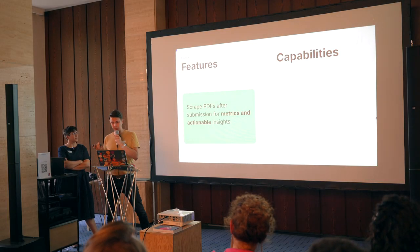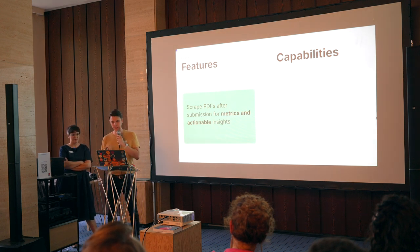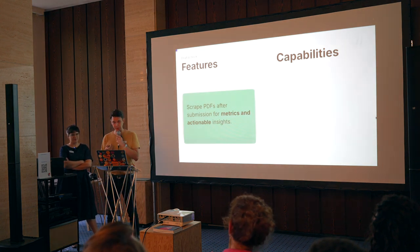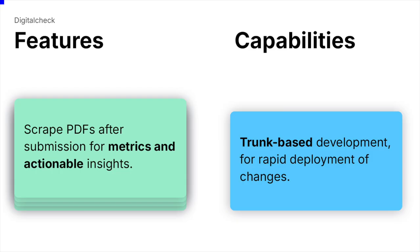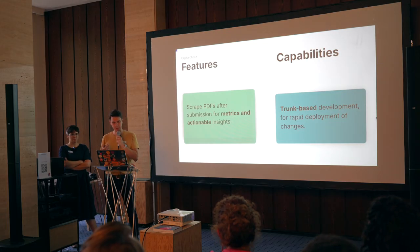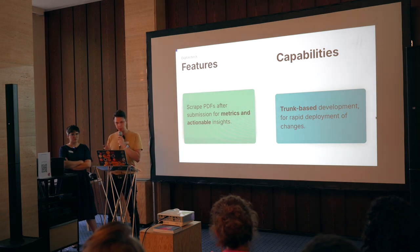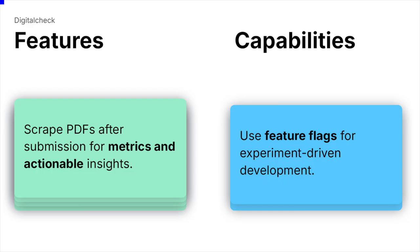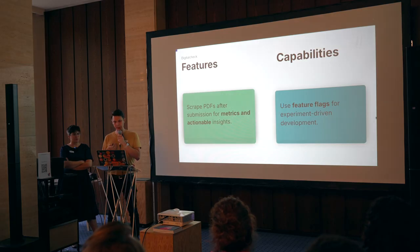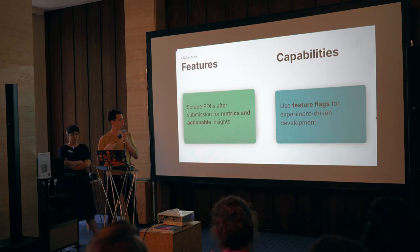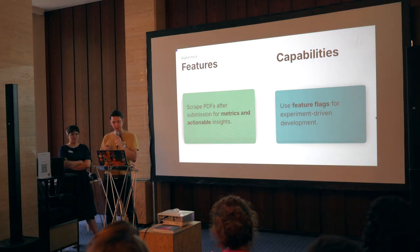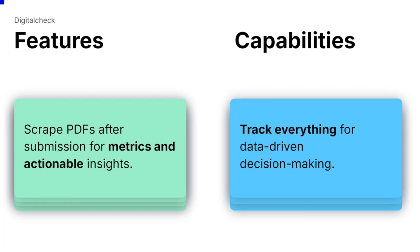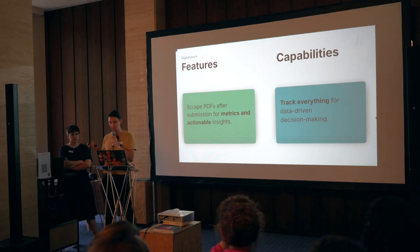We also have some less visible features built into our development process. We're working trunk-based, meaning we can deploy changes really quickly — releasing new versions of the website multiple times a day if necessary. We're using feature flags so we can run experiments: turning features on and off really quickly makes testing, user interviews, and testing new features very easy. And finally, we're tracking every user interaction so we can make decisions based on quantitative behavioural data.